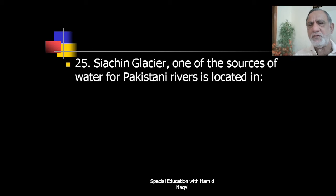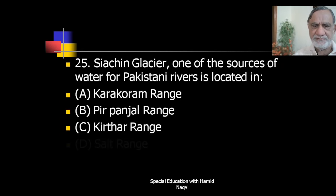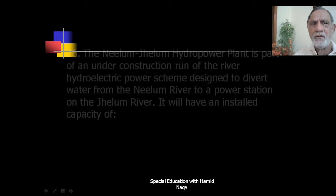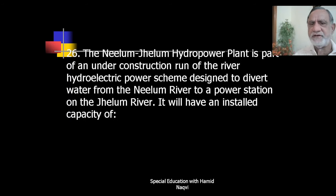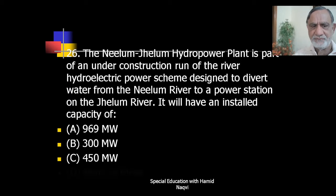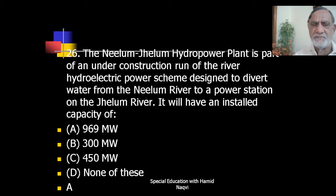Siachen Glacier, one of the sources of water for Pakistani rivers, is located in the Karakoram range. The Neelum-Jhelum hydropower plant is part of an under-construction run-of-the-river hydroelectric power scheme designed to divert water from the Neelum river to a power station on the Jhelum river. It will have an installed capacity of 969 megawatts.